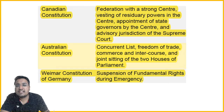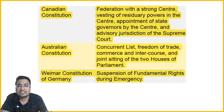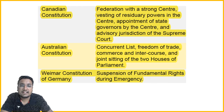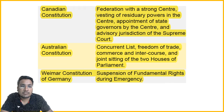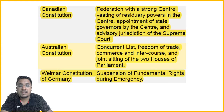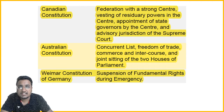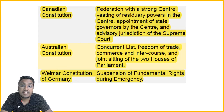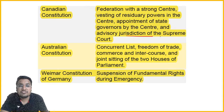From the Canadian Constitution, we borrowed the concept of a federation where the center is strong compared to the states, because residuary powers rest with the center. In our constitution there are three lists — Union List, State List, and Concurrent List. Powers not listed in any of the three automatically go to the center. The governor of a state is also appointed by the center, reinforcing strong central power. We also borrowed the advisory jurisdiction of the Supreme Court.